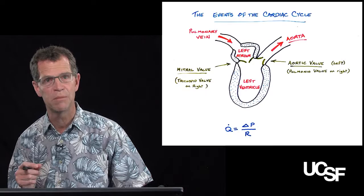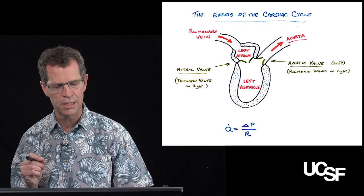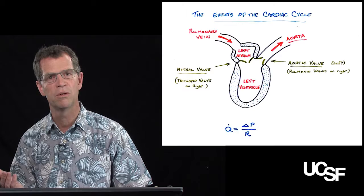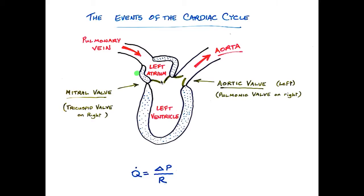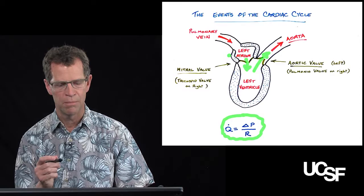Before we get into the basic events of the cardiac cycle, I want to give a quick reminder of basic heart anatomy. We're going to focus entirely on the left side of the heart — the left atrium and left ventricle — though everything applies to the right heart as well, except that pressures on the right side are much lower. On the left side, the pulmonary vein drains into the left atrium, blood flows through the mitral valve into the left ventricle, and then out through the aortic valve into the aorta. Blood flow through those valves is governed by Q equals delta P over R.